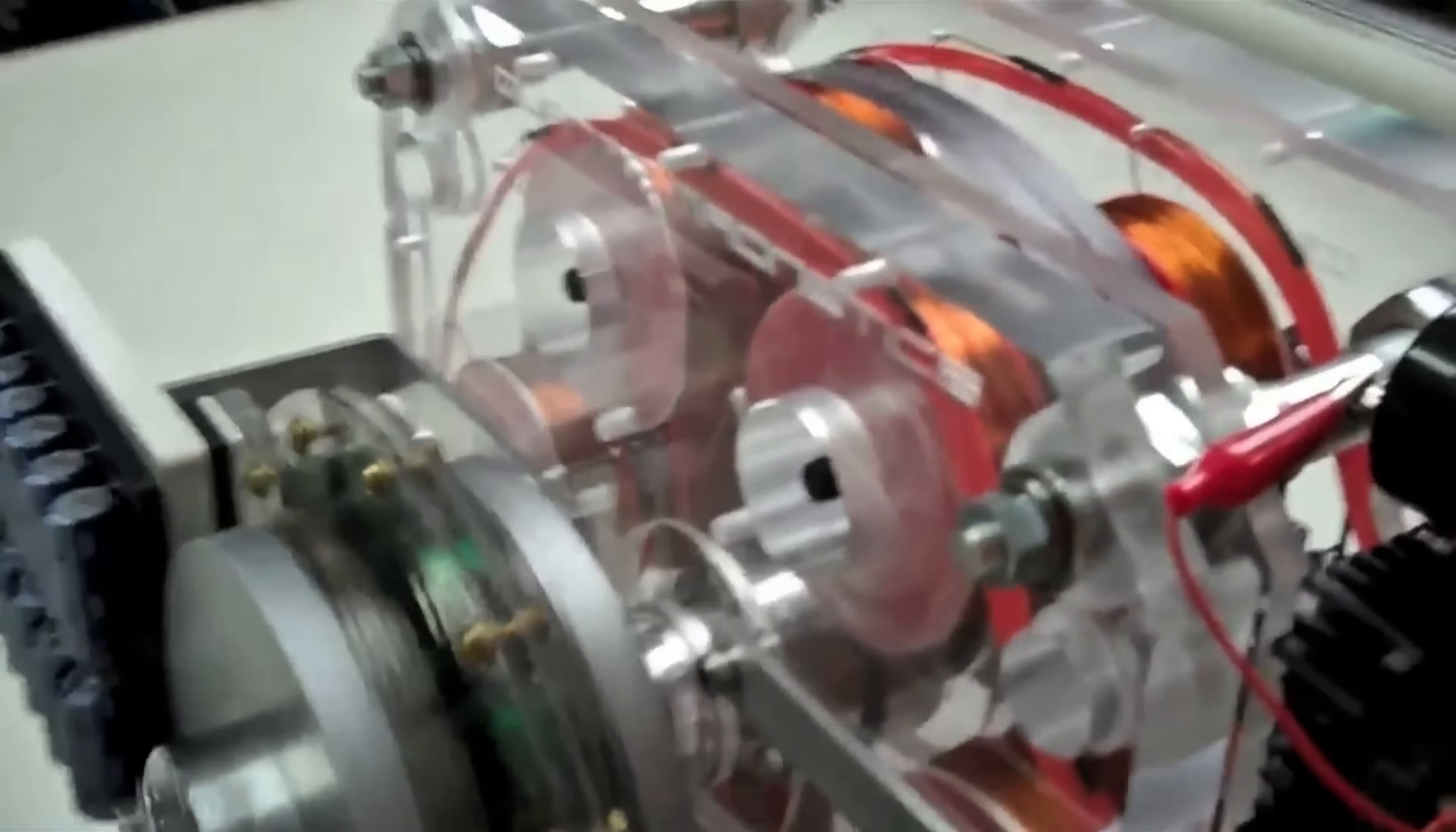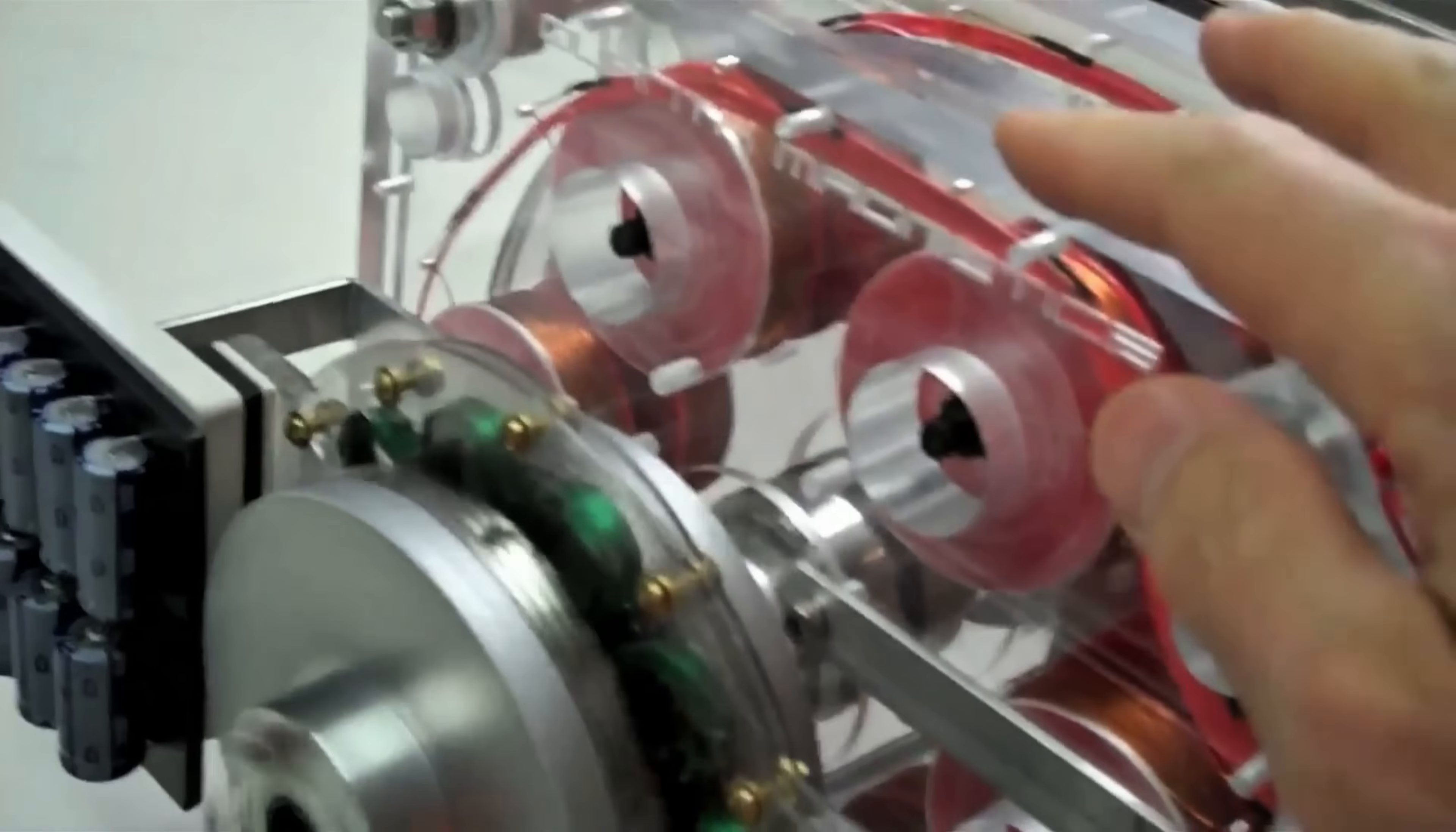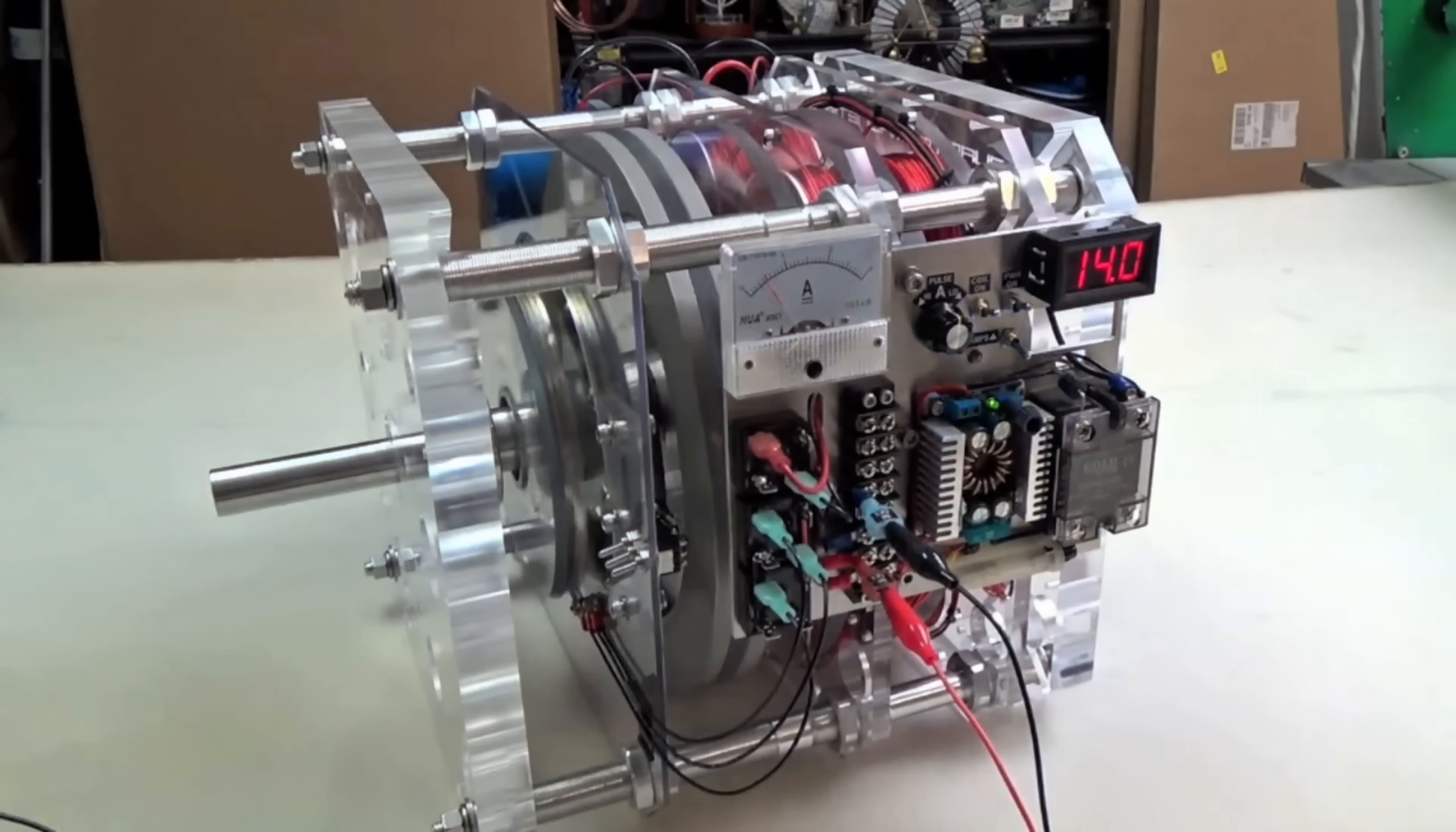The engineers call this an open synchronization system. What that means is, if you slow down the motor part, the heavy flywheel tends to keep spinning and will actually drag the motor along by its magnetic attraction. Conversely, if the motor were sped up suddenly, the flywheel's inertia would pull it back.